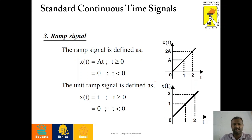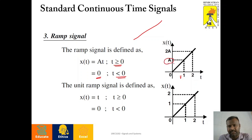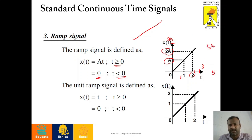The third signal is the ramp signal. The name itself has its meaning — it looks like a ramp. This ramp signal is defined as x of t equals A times t for t greater than or equal to zero, and x of t equals zero when t is less than zero. When t equals 1 we have amplitude A, when t equals 2 we have amplitude 2A, when t equals 3 we have amplitude 3A, and at time instant 5 we have amplitude 5A and so on. Hence, it will give a ramp shape.